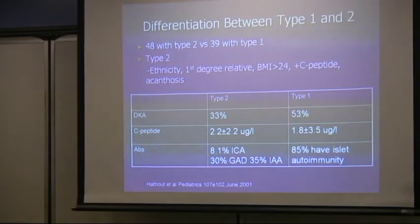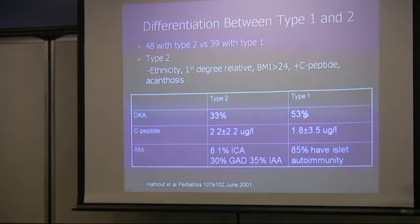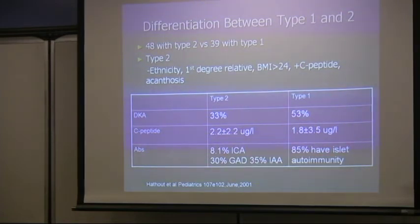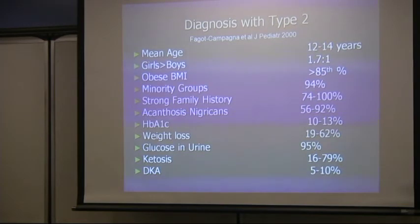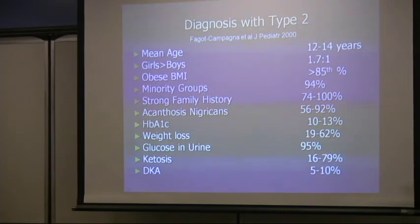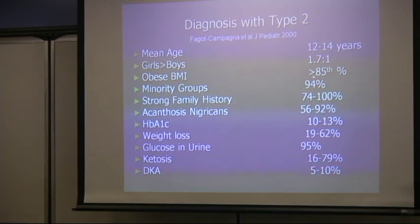An additional summary differentiating type 1 and type 2 shows data including DKA rates — type 2 at 33% vs. 53% for type 1 — as well as C-peptide levels and presence of islet cell antibodies in type 1 and type 2, from 2001 data. Based on data published in 2000, the mean age of type 2 diabetes diagnosis in children is 12 to 14, it is slightly more common in girls than boys, and obesity is nearly universal, particularly true for minority groups.